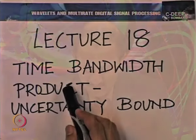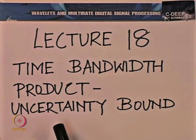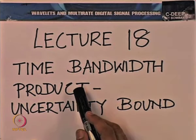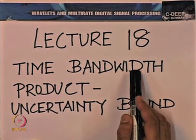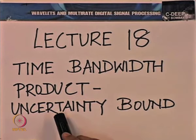What we intend to talk about today is what is called the time-bandwidth product — essentially the product of the time variance and the frequency variance. We wish to build a lower bound on that product based on some very fundamental principles that could be explained when we look at functions as vectors. With that background, let us recall some of the definitions brought out in the previous lecture.